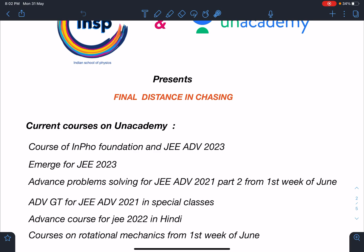Advanced problem solving for JEE Advanced 2021 Part 2 is starting very soon, first week of June. And Advanced GT for JEE Advanced 2021 is already happening in special classes. We have conducted 15 or 16 tests so far.